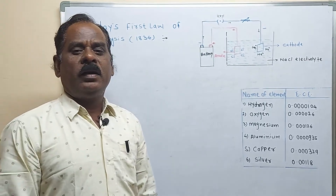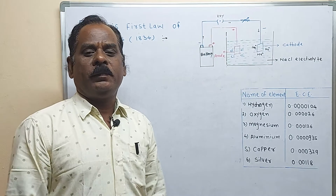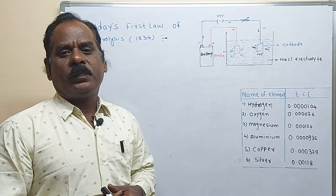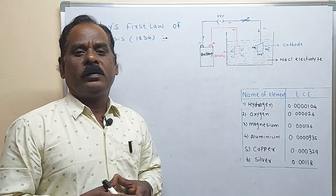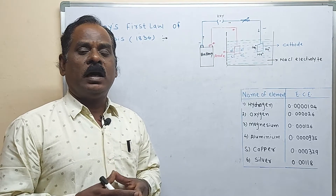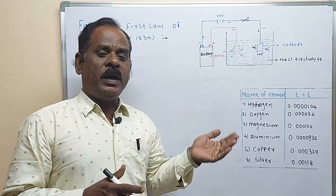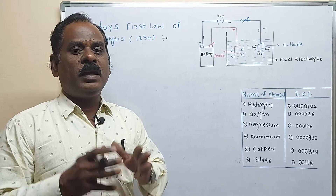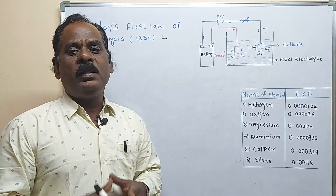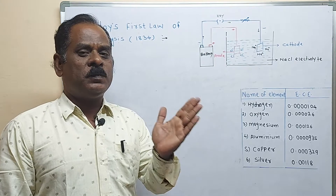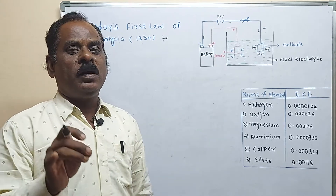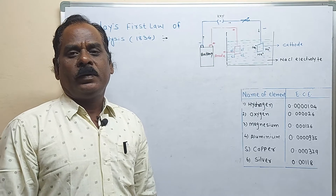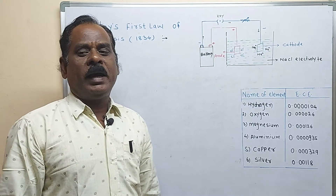the scientist Michael Faraday conducted a number of experiments in which he passed electricity through different electrolytes. He measured the amount of substance liberated or deposited on the respective electrode, and he made a relation between the amount of substance deposited or liberated on the respective electrode and the quantity of electricity passed through the conductor or electrolyte. That relation is called Michael Faraday's law.